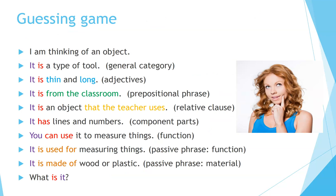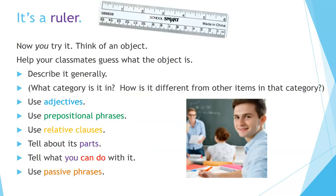Guessing game. I'm thinking of an object — can you guess what it is? It's a type of tool — that's the general category. It's thin and long — those are adjectives. It is from the classroom — prepositional phrase. It is an object that the teacher uses — relative clause. It has lines and numbers — component parts. You can use it to measure things — function. It is used for measuring things — passive phrase telling about function. It is made of wood or plastic — passive phrase telling about material. What is it? It's a ruler.